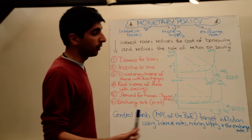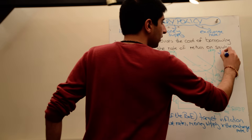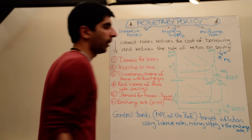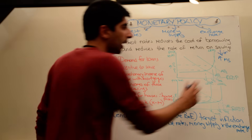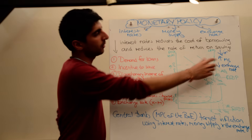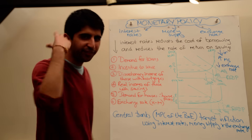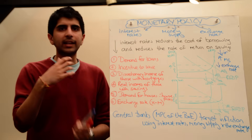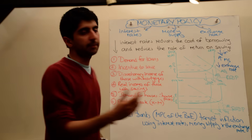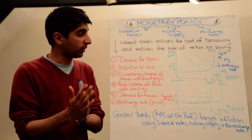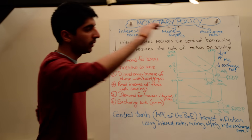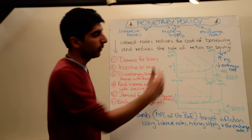Expansionary monetary policy includes any monetary policies that will increase aggregate demand, shifting it to the right. A reduction in interest rates will shift aggregate demand to the right. An increase in the money supply (MS) will also increase aggregate demand. A reduction in the exchange rate — though it's hard to manipulate the exchange rate, making it a minor branch — can be achieved by reducing interest rates or by governments meddling in the foreign exchange market by buying foreign currencies, causing the exchange rate to depreciate. Really, interest rates and money supply are the big ones and are all examples of expansionary monetary policy.